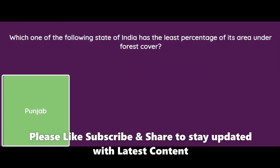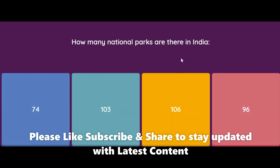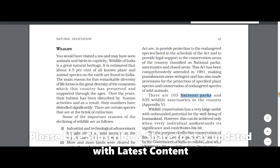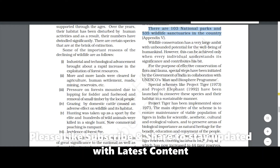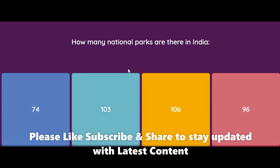How many national parks are there in India — 74, 103, 306, or 96? The correct answer is 103. As per the book, there are 103 national parks and 535 wildlife sanctuaries in the country. You can refer to Appendix 5 in the textbook for the full list.